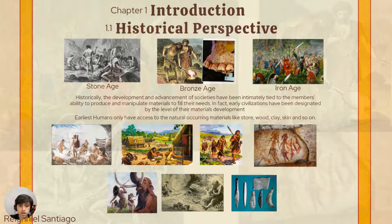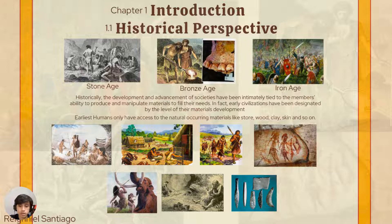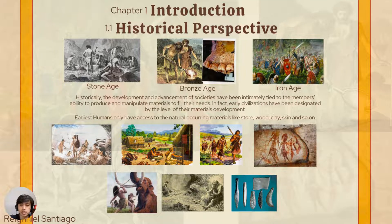Next is the introduction. Here we can see the historical perspective, where we start in the Stone Age, where our ancestors mainly used stone for their everyday life. Next is the Bronze Age, where they discovered metals like bronze — materials that can be much stronger than stone. And the last is the Iron Age, where our ancestors greatly made use of resources to develop and advance their way of living.